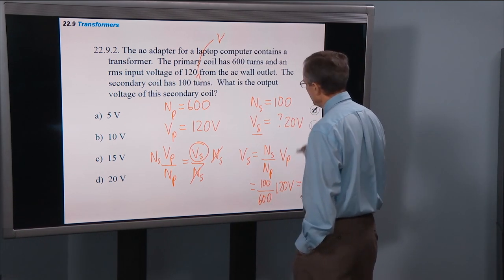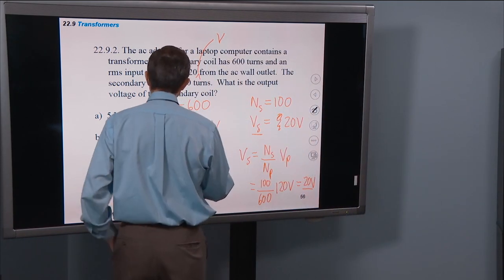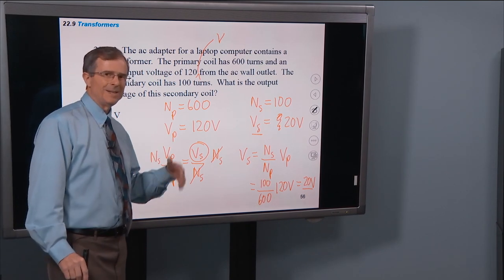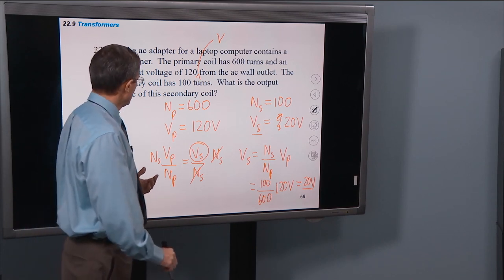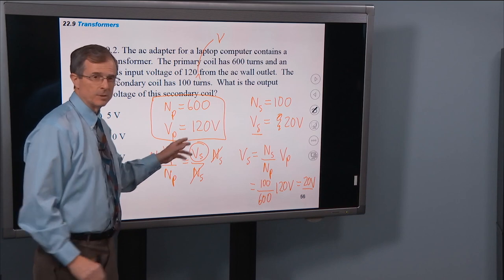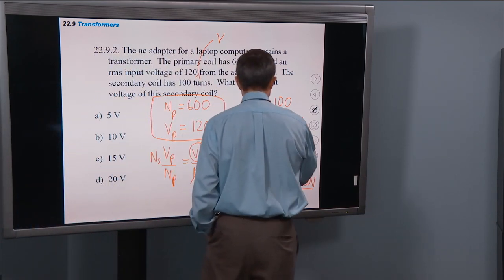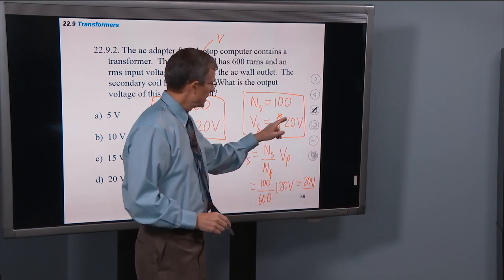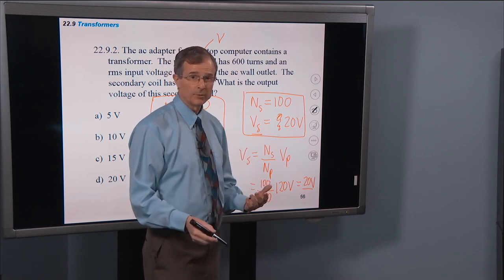So what this has shown is if you go, this is what they call a step-down transformer. We're going from a primary with a large number of turns and a large voltage to a secondary with a smaller number of turns and a proportionately smaller voltage. So it's called a step-down transformer.